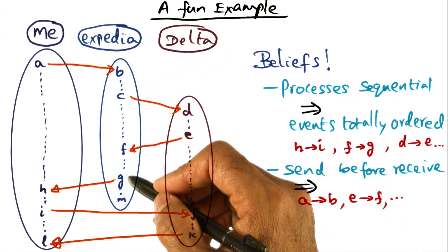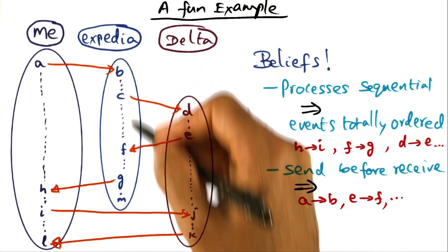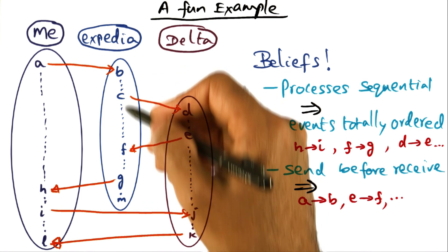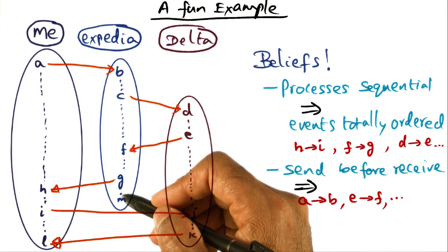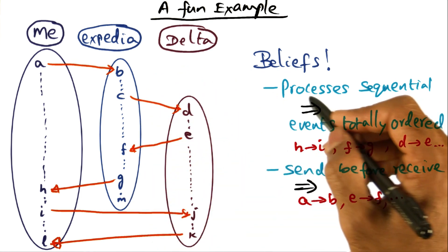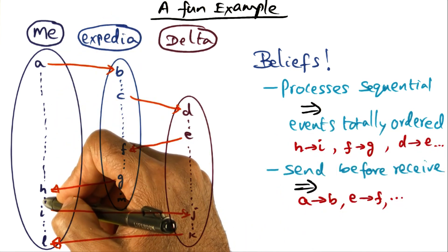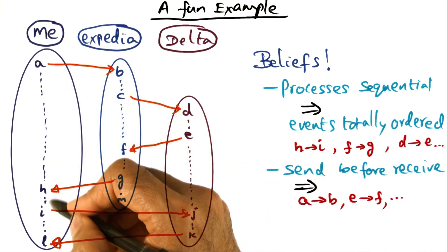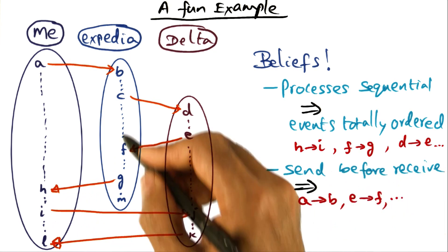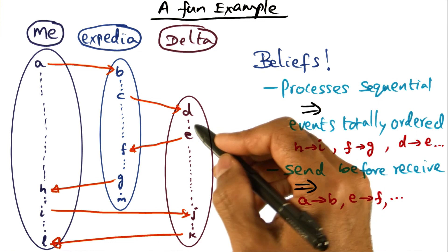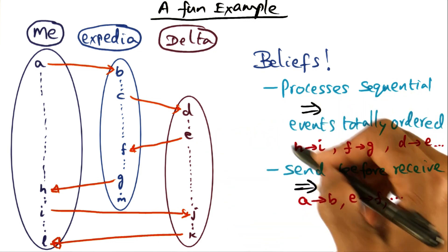That is, the execution of the process is the textual order that you see. At least the apparent effect of the execution of the process that you as a user experience is sequential. So if I look at this particular process, H happens before I, F happens before G, and D happens before E. So all of these are things that are ingrained in our mental model of processes being sequential.